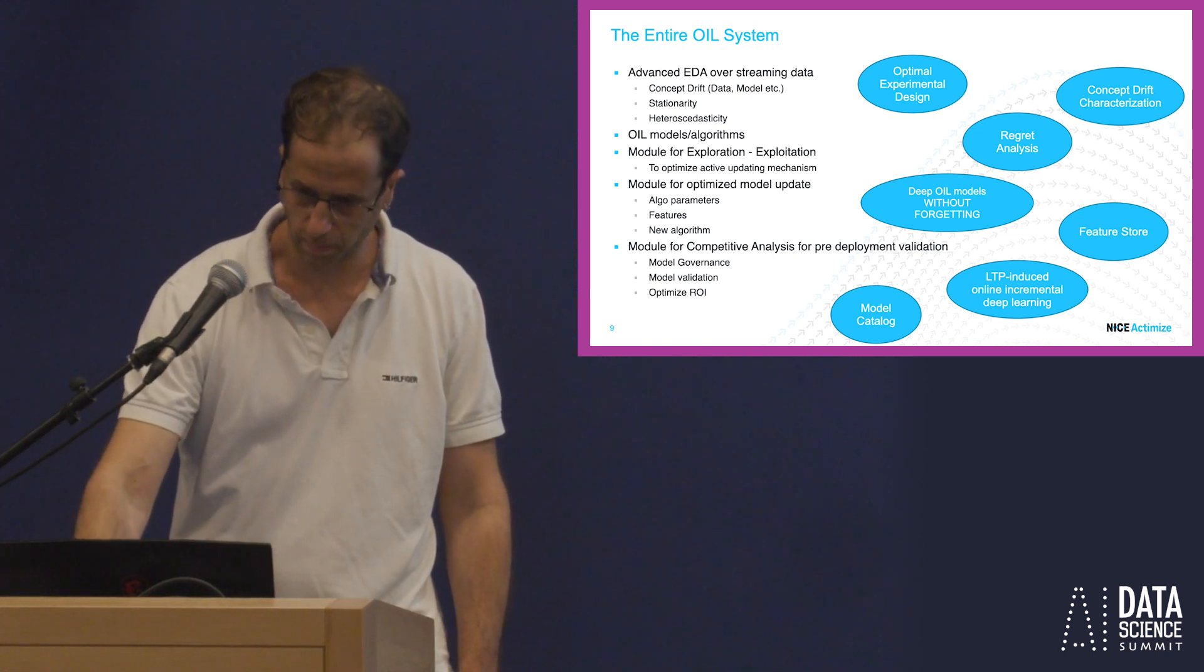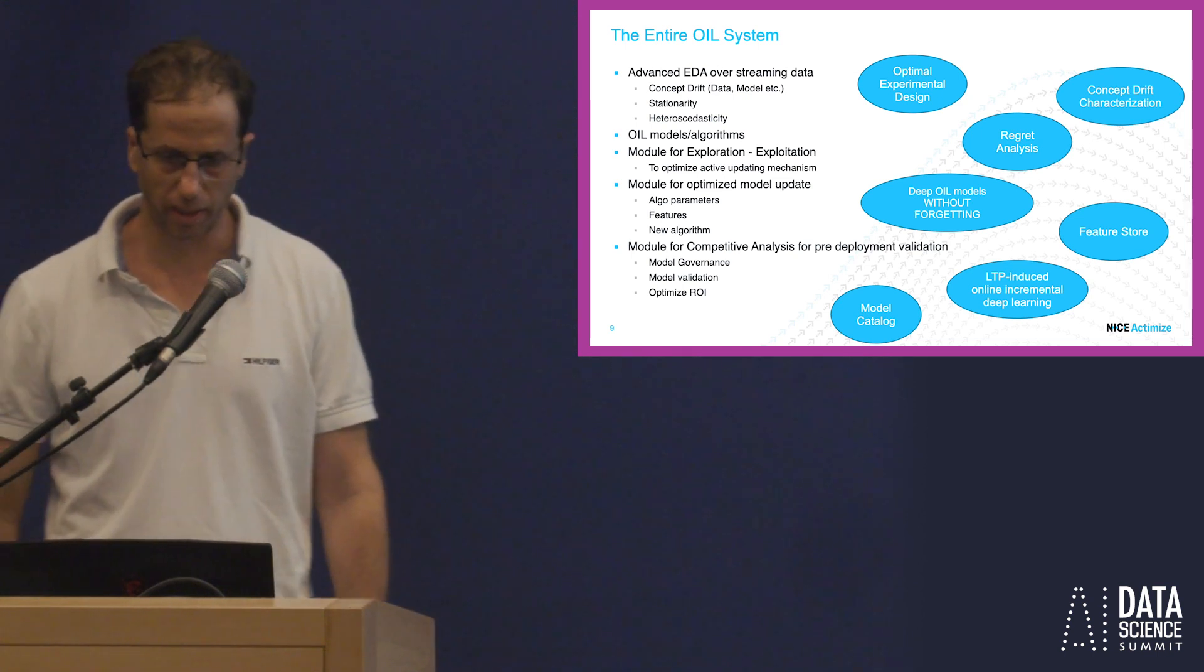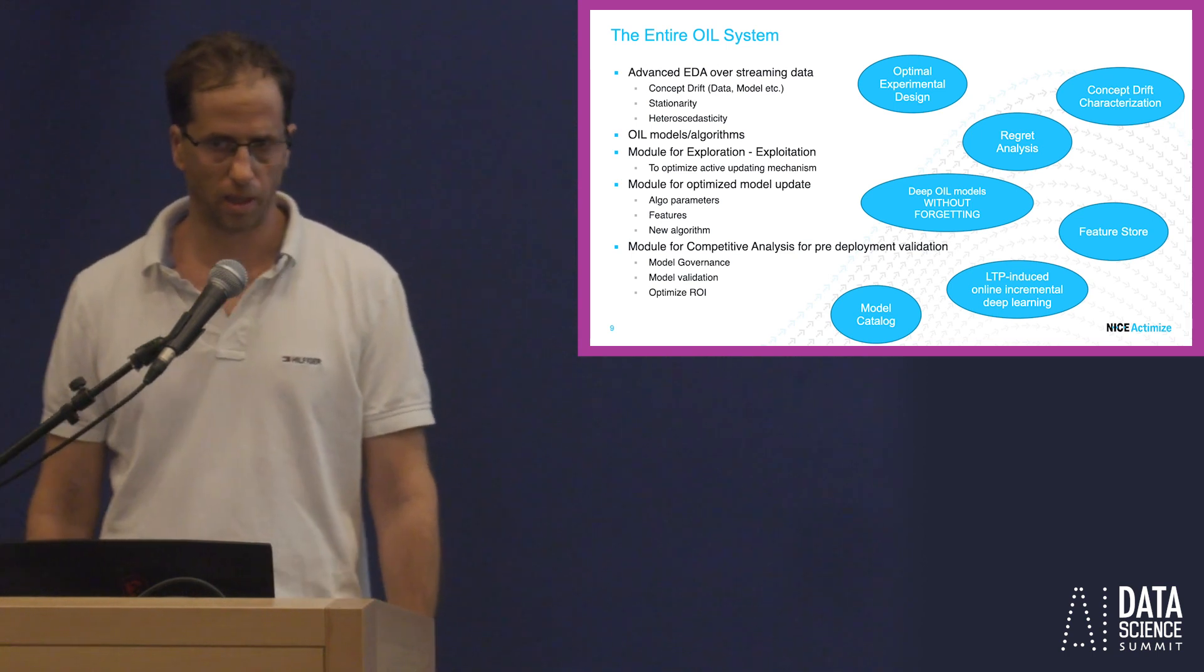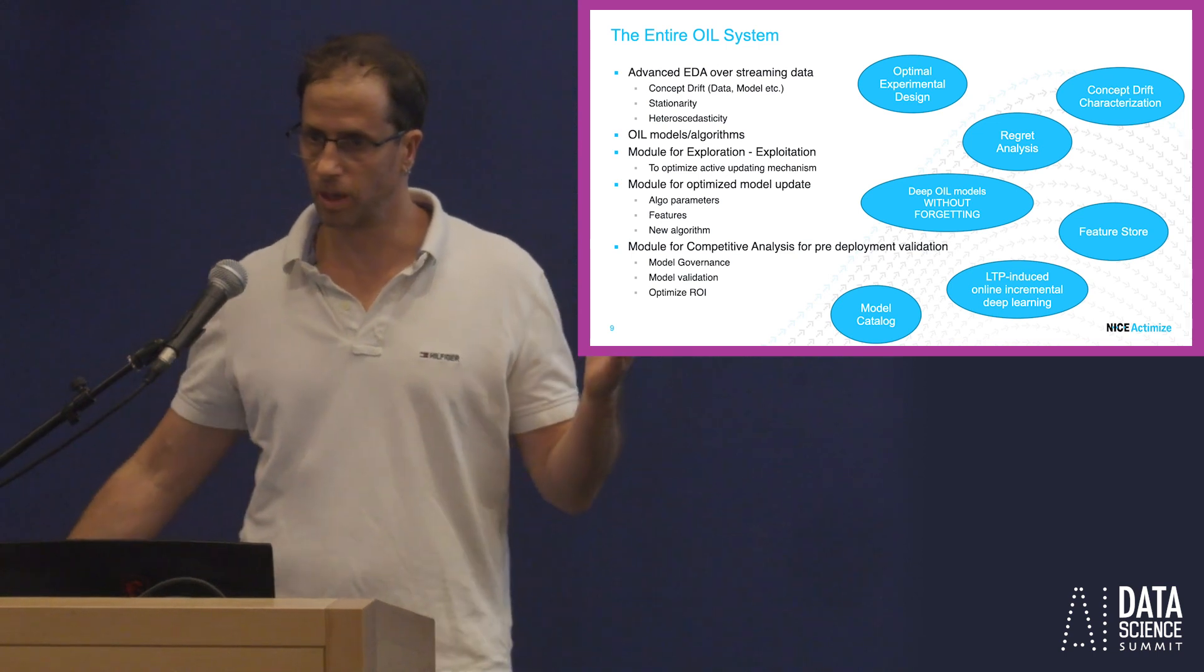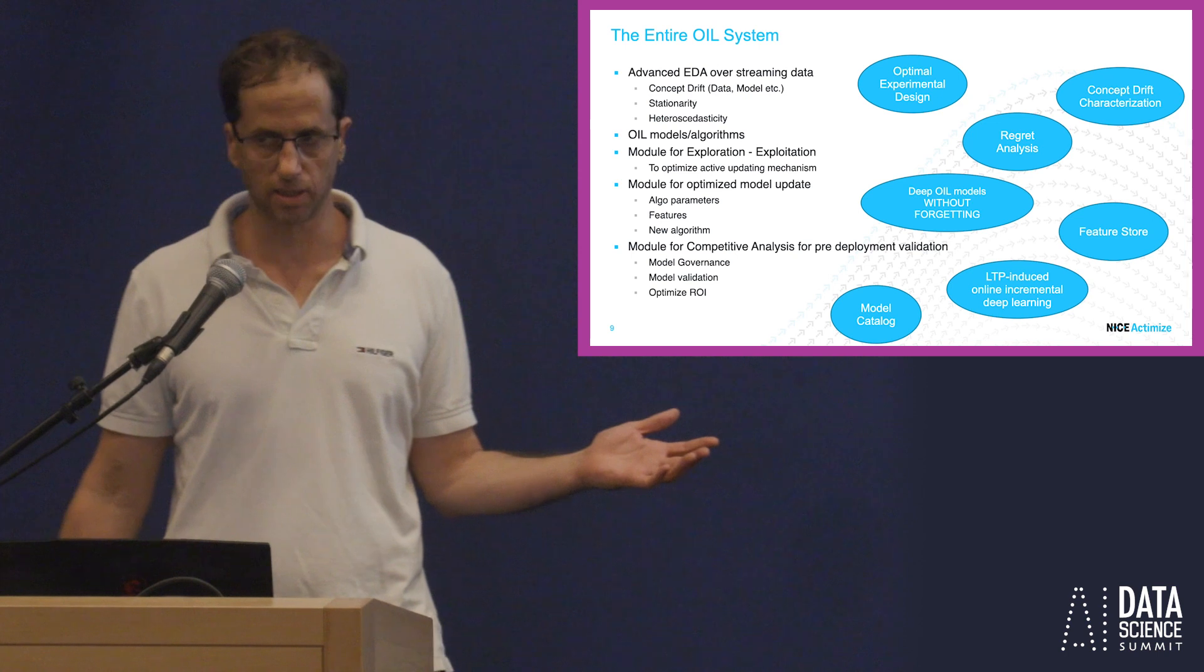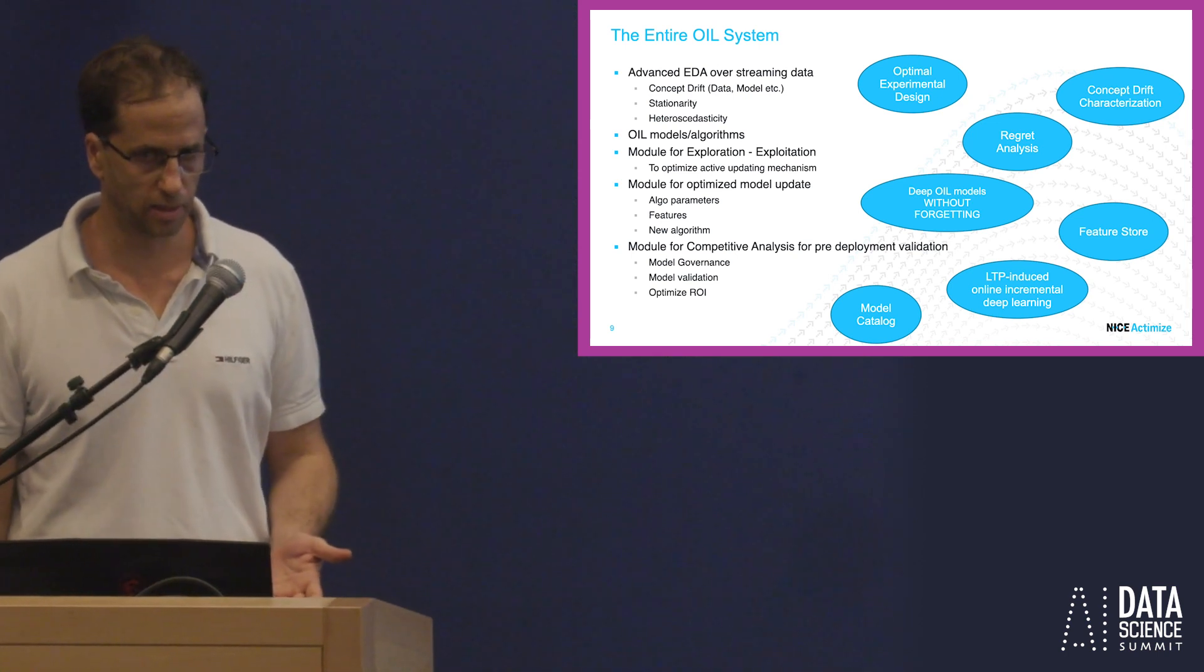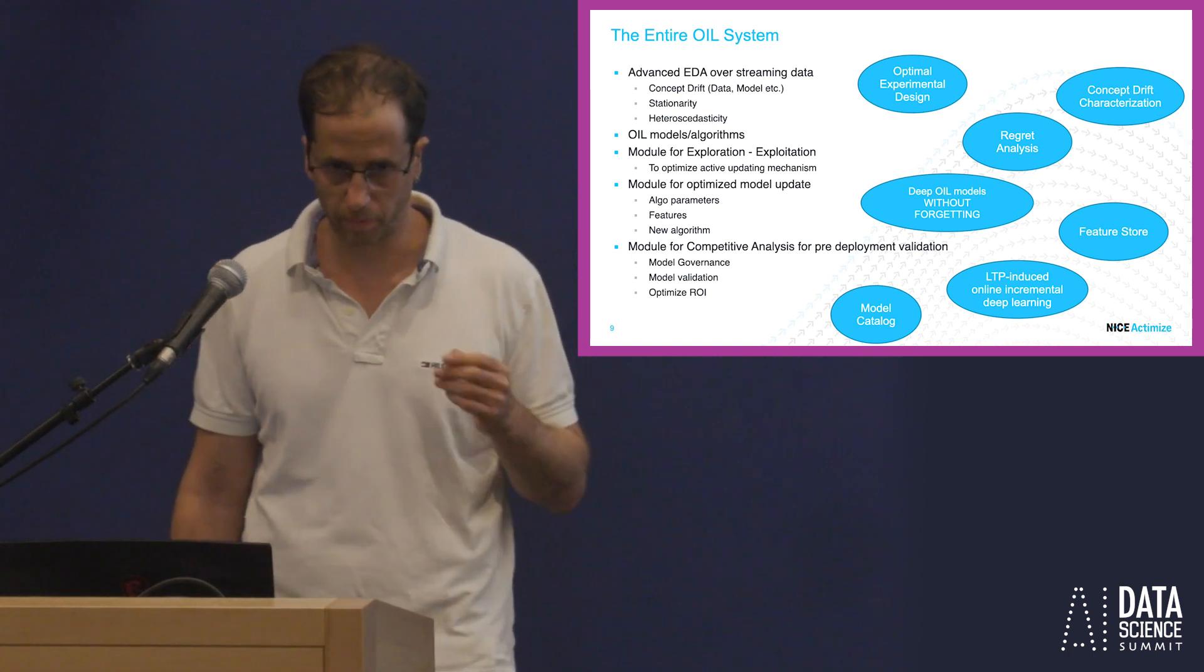But that's, of course, just a simplification. We added all kinds of cool stuff, which are actually patent, such as optimal experimental design. We live in, it's bigger than big data. I don't know how to call it. It's enormous data, three million transactions per day sometimes, and I don't really want to train on all of them. So we pick only the one with more information. Then we have a patent on that.